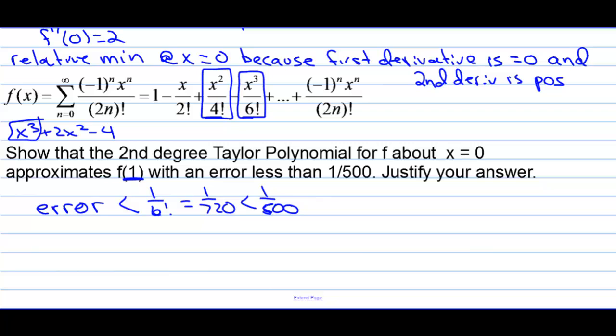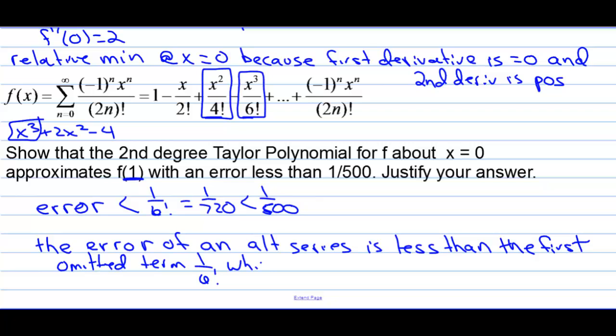The error of an alternating series is less than the first omitted term, 1 over 6 factorial, which is less than 1 over 500. So, there's what says justify your answer. That's a nice English sentence that explains how I know that I've done the problem correctly.